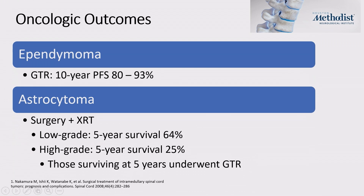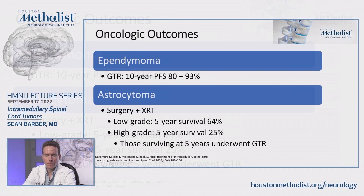Outcomes depend on pathology. For ependymoma with gross total resection, outcomes are typically very good — 10-year progression-free survival is around 90%. Astrocytoma outcomes are more variable, depending on grade and degree of resection. High-grade astrocytomas, particularly when gross total resection is not achievable, tend to have less favorable outcomes.